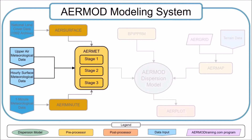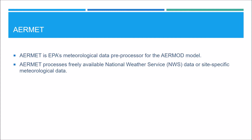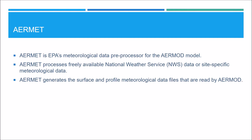AirMet is the only pre-processor that is split into three different stages. AirMet is EPA's meteorological data pre-processor for the AirMod model. AirMet processes freely available National Weather Service data or site-specific meteorological data, and generates surface and profile meteorological data files that are read by AirMod. The example we're going over is based on data from 2014.